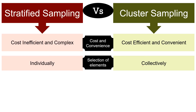Regarding selection of elements: in stratified sampling we randomly choose items from each subgroup, whereas in cluster sampling we randomly choose a number of subgroups and study them collectively as a whole. In cluster sampling, members from randomly selected clusters form the sample, while in stratified sampling researchers consider individual components of the strata randomly as part of the sampling units.